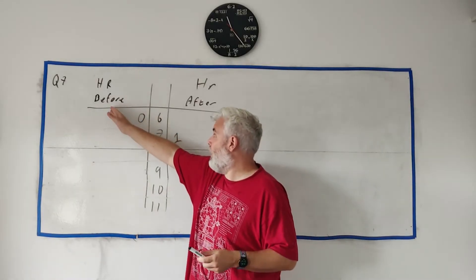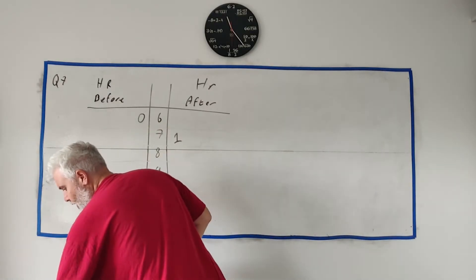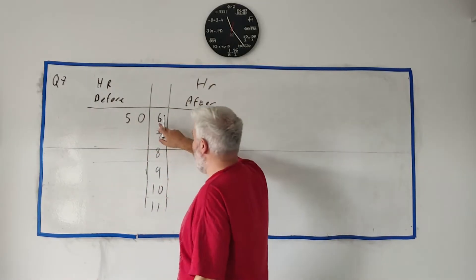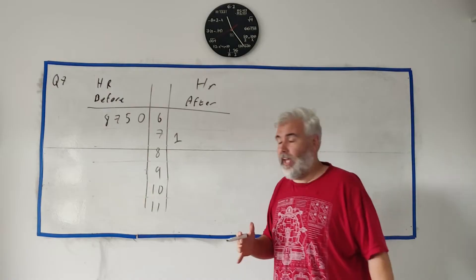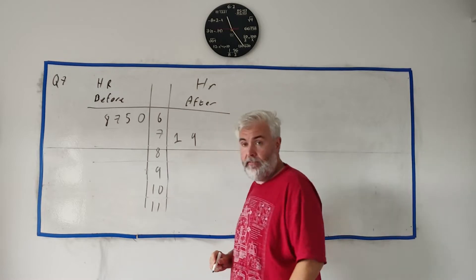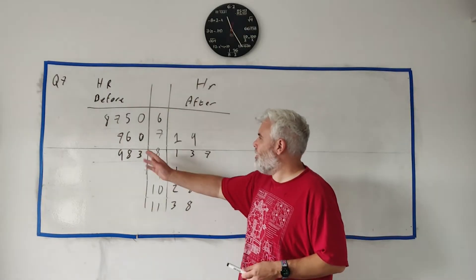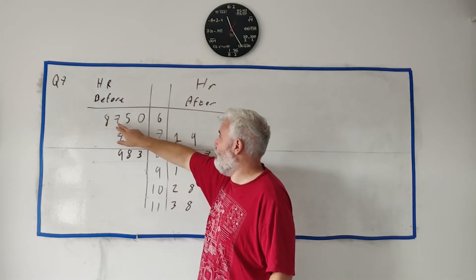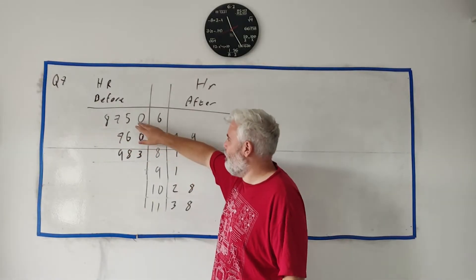In the before exercise column there was the number 60, and that's where we get 6-0. There's also a 65, so that's 6-5, there's a 67 — 6-7 — and there's a 68. That's what the before exercise side of the stem and leaf diagram looks like. For the after exercise, for example, there's a 71 and a 79.